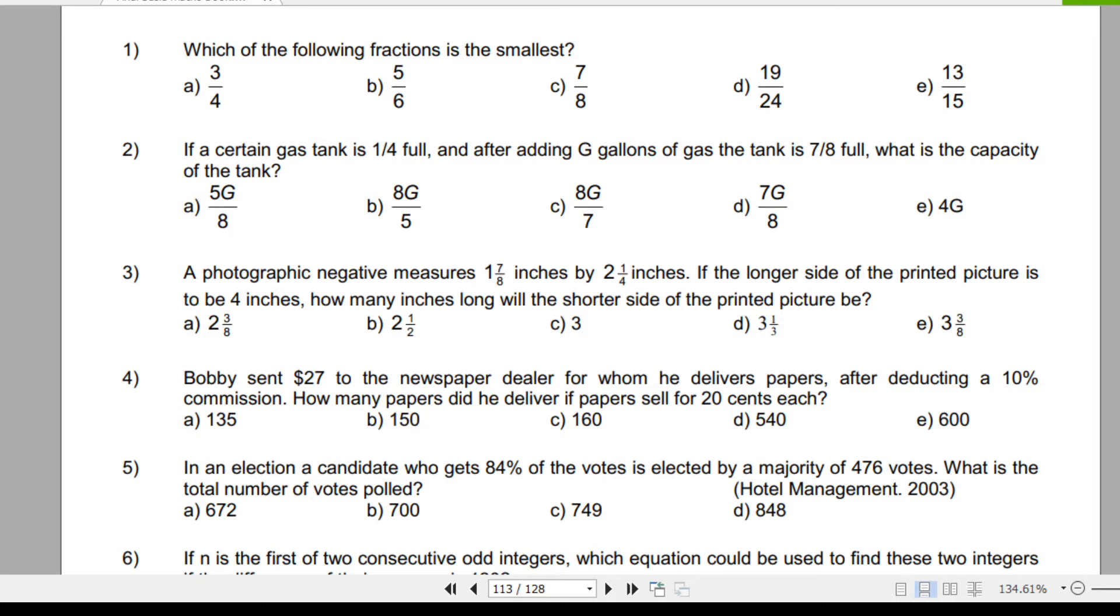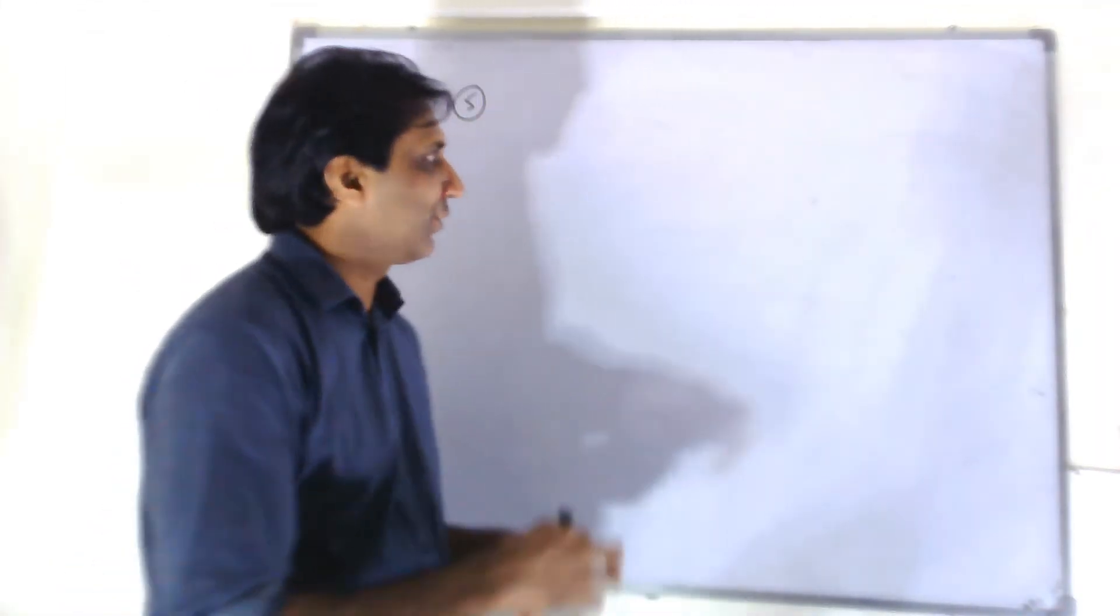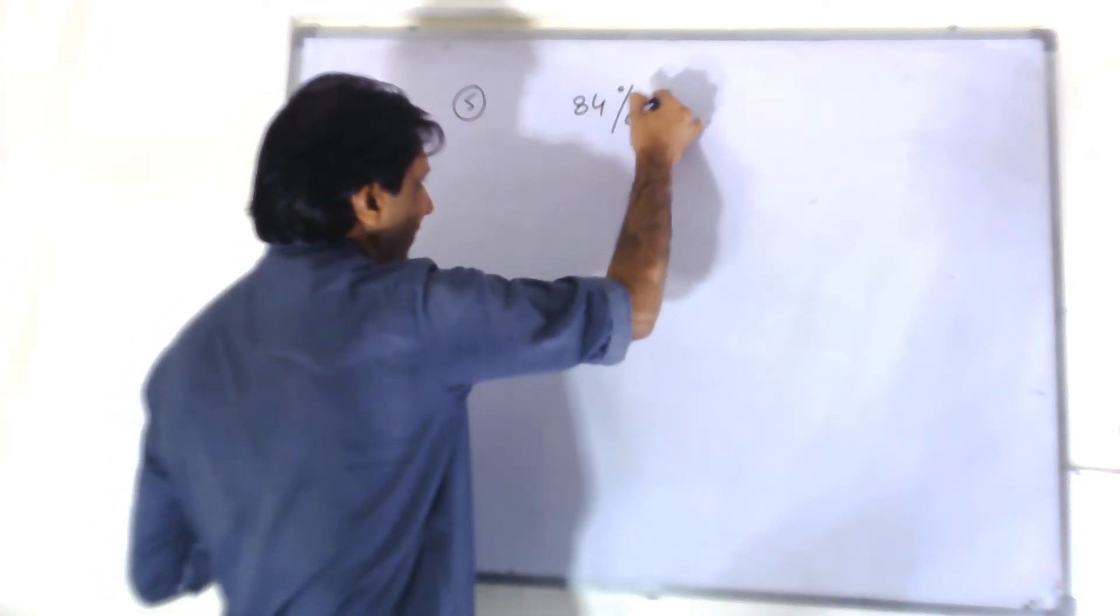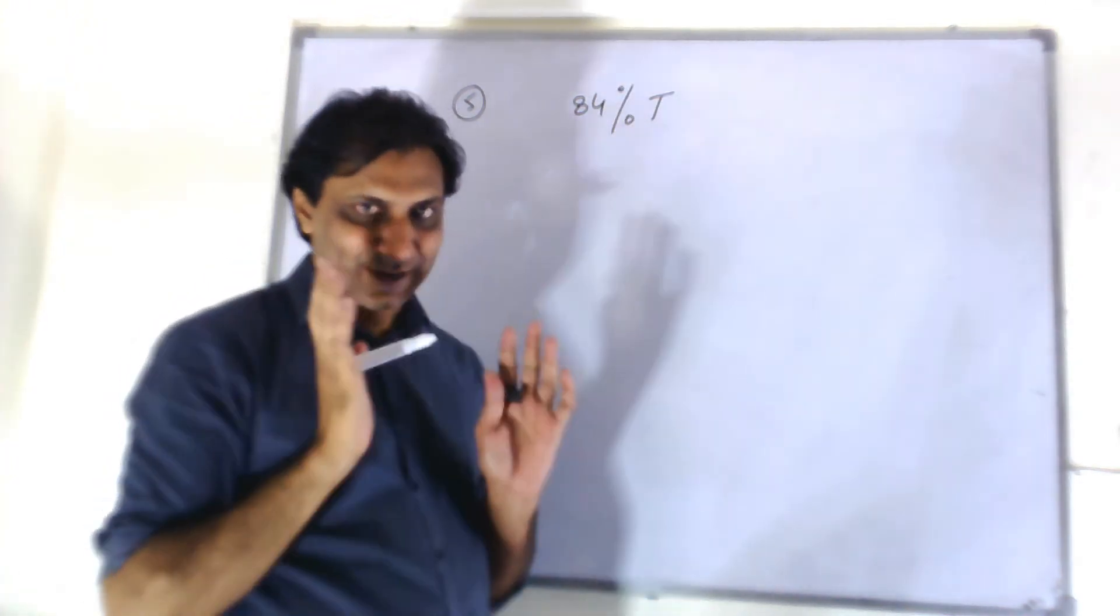Question number 5. In an election, a candidate who gets 84% of the votes is elected by a majority of 476 votes. What is the total number of votes polled? He got 84% and won by 476 votes. There are two of them. One got 84% of total votes.